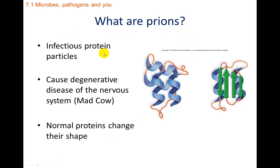Now, prions are even smaller. Prions are infectious protein particles — they don't even have any DNA. There aren't too many human diseases caused by prions, fortunately. They cause the nervous system to break down. One example is mad cow disease. What happens is that normal proteins change their shape, and when they do, they cause neurons to break down. In order to get a prion disease, you have to eat or ingest something that contains the prion. For instance, if a cow eats parts of another cow — like if ground-up cow is put into their feed — that's how they get a prion. There are some human prion diseases, but not many.